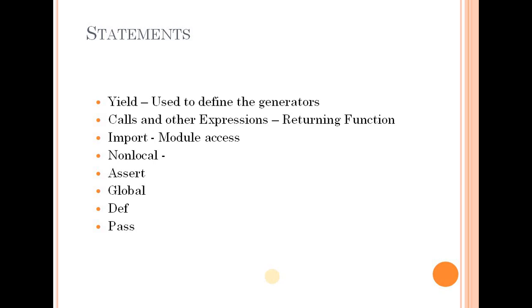In summary, we discussed operator precedence and priority, how to check which operator is evaluated first in an expression. When operators have the same priority, associativity — left-to-right — is used. We also discussed the various statements available in Python. Thank you.